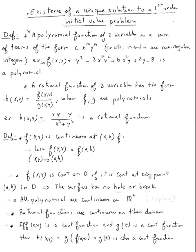Now what's a rational function? A rational function has this form — f of x, y is a rational function. A polynomial divided by a polynomial will give you a rational function. Here's an example of a rational function: polynomial over a polynomial.